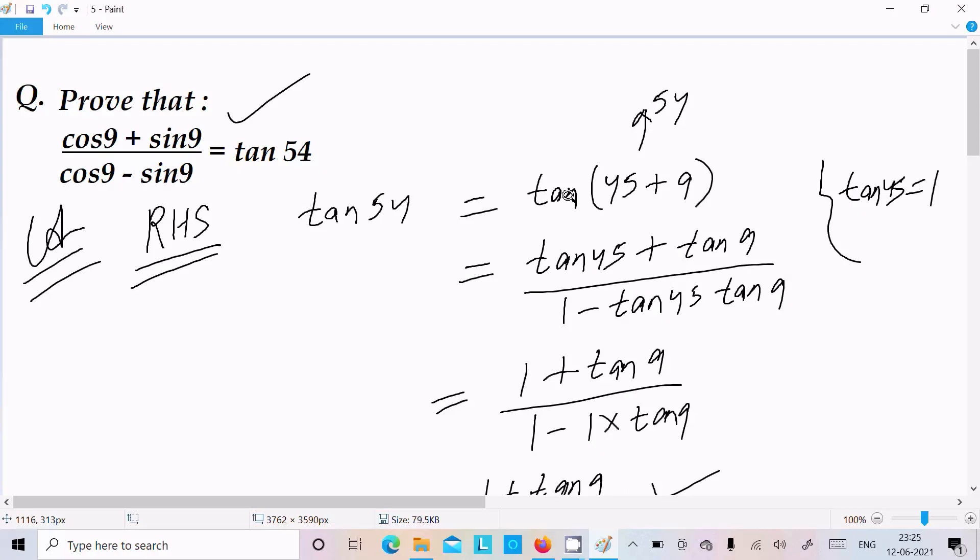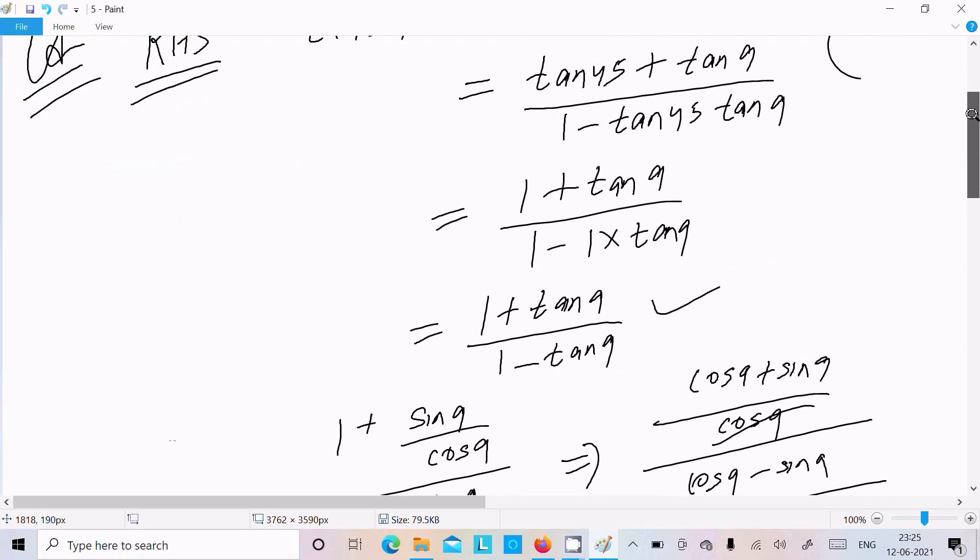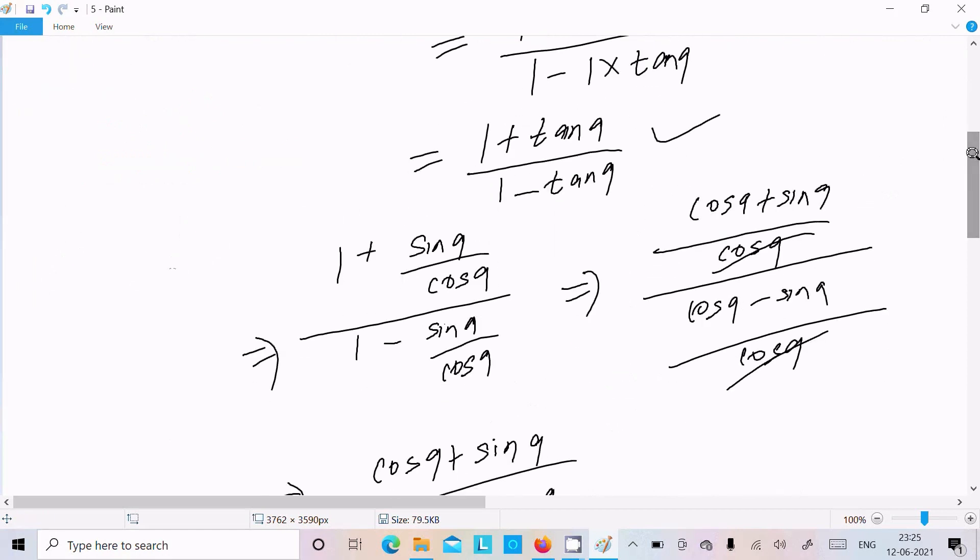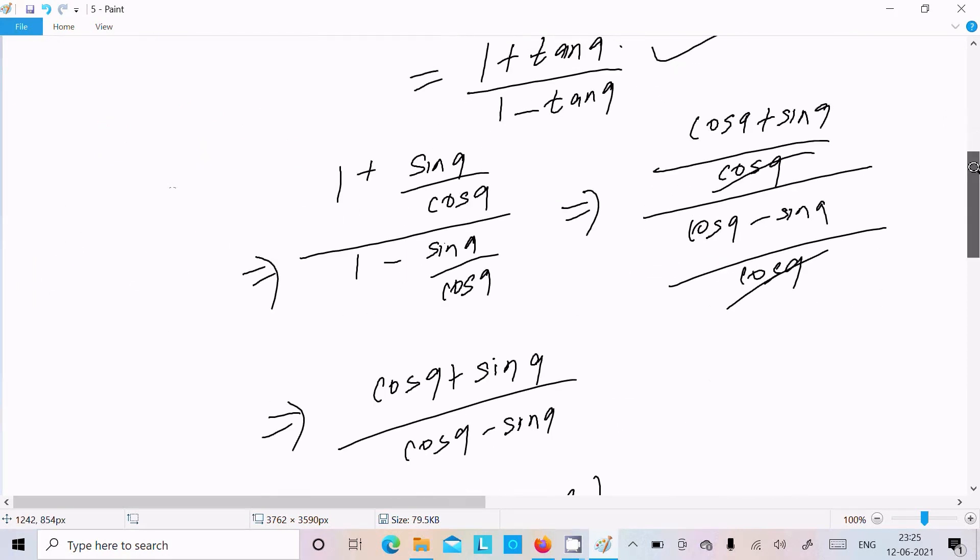And here tan54 we can write as tan(45 plus 9), tan45 because we have the value of tan45 as 1. And after that break into tan54 and put the value of tan45 here. You can get this one, convert sine cos, after that you can get this one.